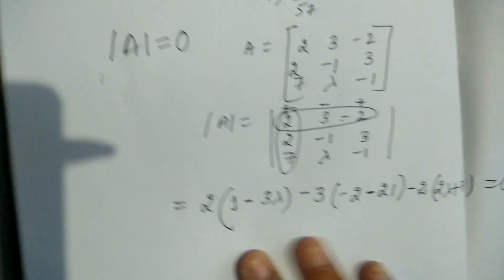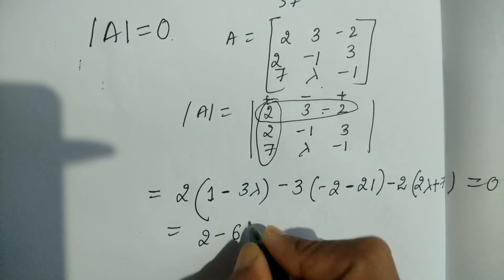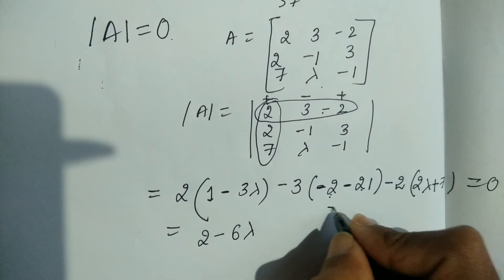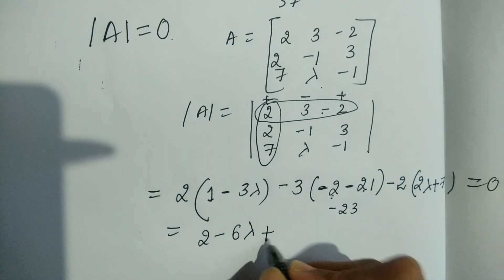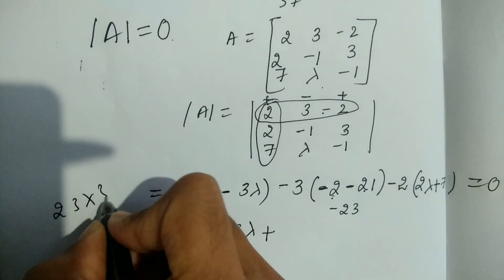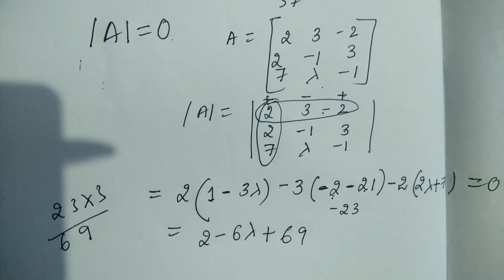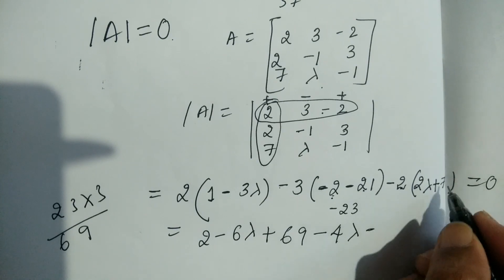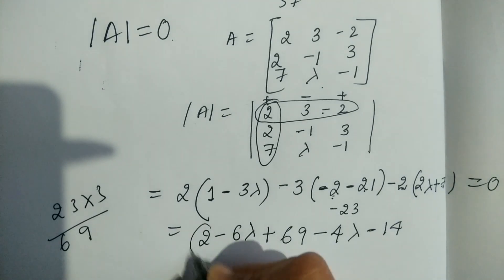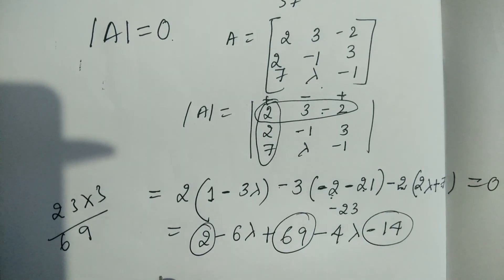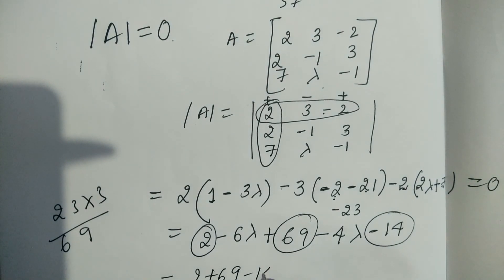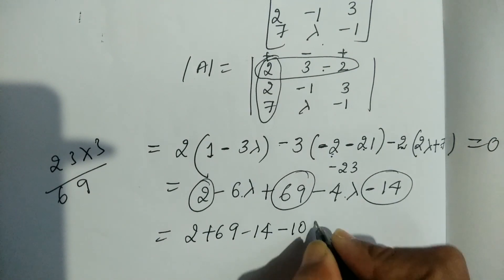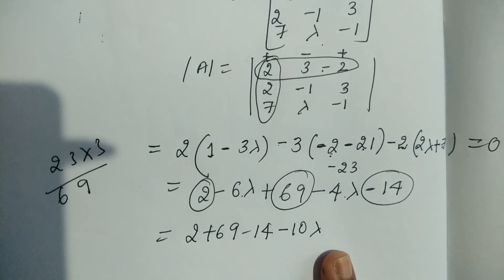Simplifying: 2 into (1 − 3λ) = 2 − 6λ. Then minus 3 into (−23) = plus 69. Then minus 2 into (2λ + 7) = −4λ − 14. Combining: 2 + 69 − 14 = 57, and −6λ − 4λ = −10λ.